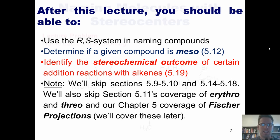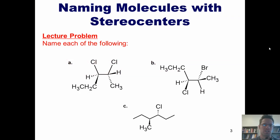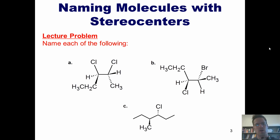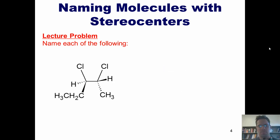Let's go ahead and begin with a lecture problem. I want you to name the following. I'm going to show you how, starting with Example A. Looking at Example A, if we were ignoring the stereochemistry and imagining that all of the bonds were just drawn flat, how would we name this molecule?